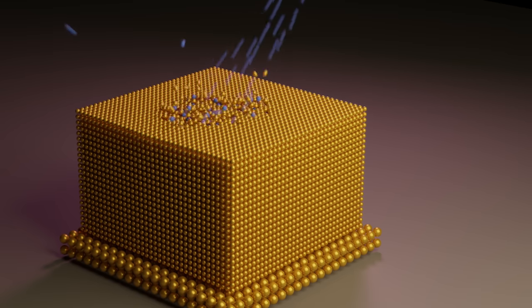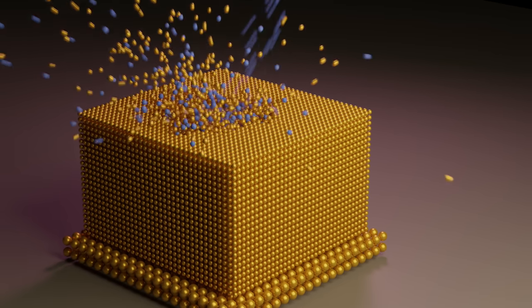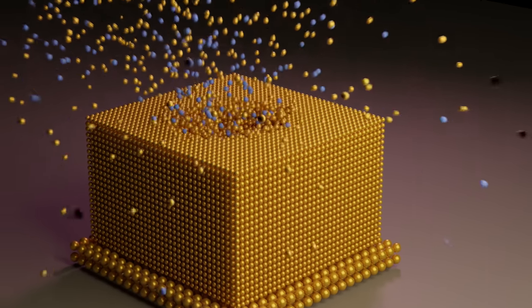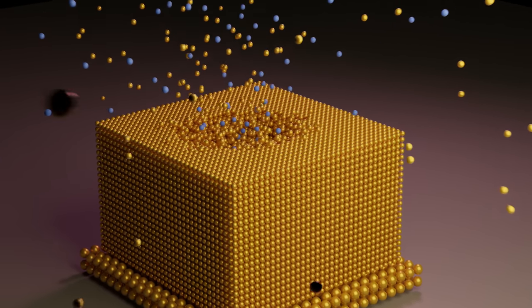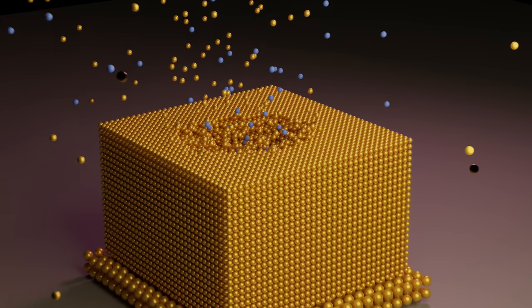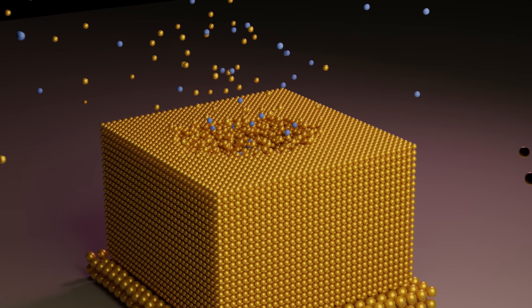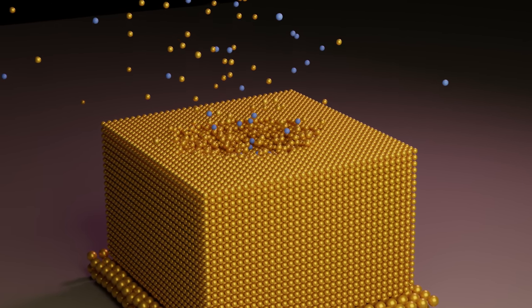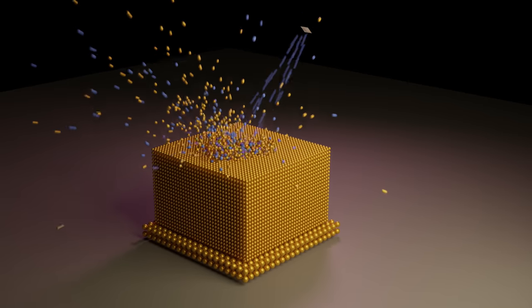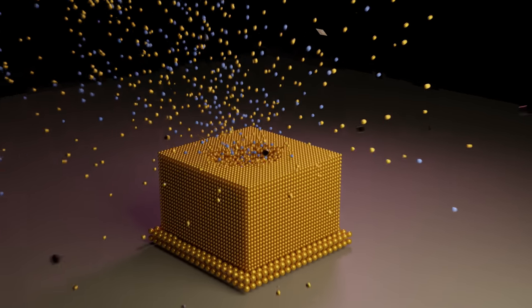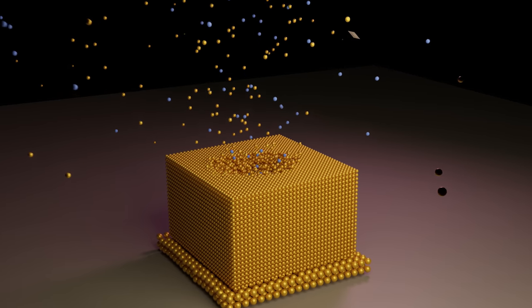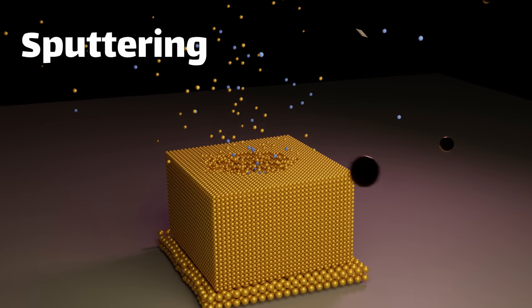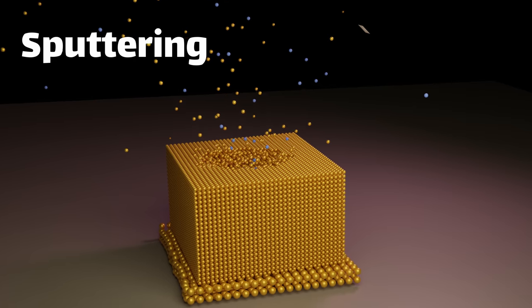The argon particles are in blue and the sample is in yellow. As the argon hits the surface, we can see a few things happening. First, the argon either bounces off without doing anything, bounces into the interior of the sample and gets stuck there, or it knocks free an atom of the sample. Over time, and with enough argon impacting the surface, a small crater is formed. This process is known as sputtering, and it's basically how we etch the surface of the sample.